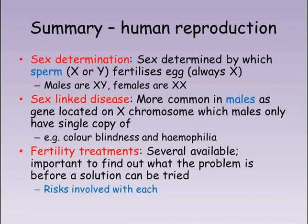So, sex in humans is determined by whether the sperm that fertilises the egg contains an X or a Y chromosome. Because males only have a single copy of the X chromosome, it's not possible for them to be heterozygous for any gene located here. This is the reason for diseases such as haemophilia and colour blindness affecting far more males than females. We call these diseases sex-linked because the gene causing them is inherited on the sex chromosomes. If a couple are infertile, there are a range of treatments available. These each have some risks associated with them and it's important to find out what the problem is before a solution can be tried.